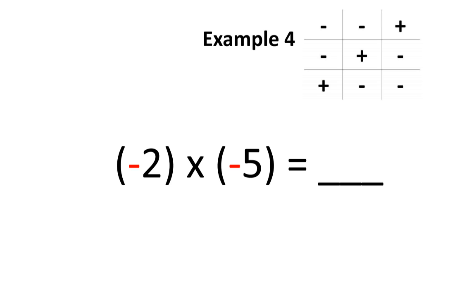In our fourth example, we want to find what negative 2 times negative 5 is equal to. Once again, you'll notice a pair of brackets around both these negative numbers. Sometimes brackets are put around negative numbers, sometimes they aren't. Let's use our shortcut. A negative number multiplied by a negative number should give you a positive number. Therefore, negative 2 times negative 5 is equal to positive 10. We don't need to put the positive sign in front of it.